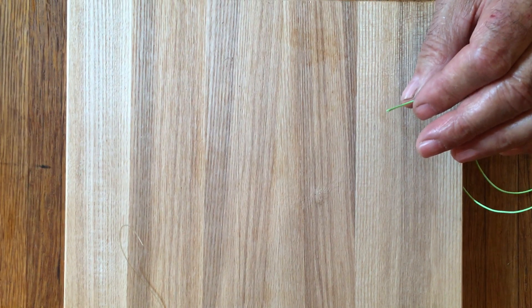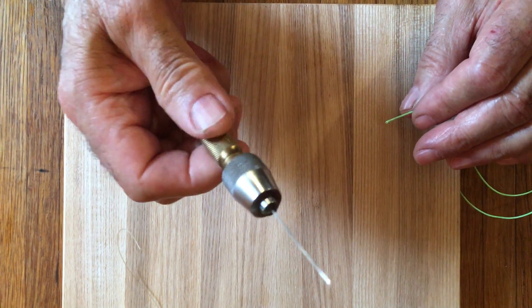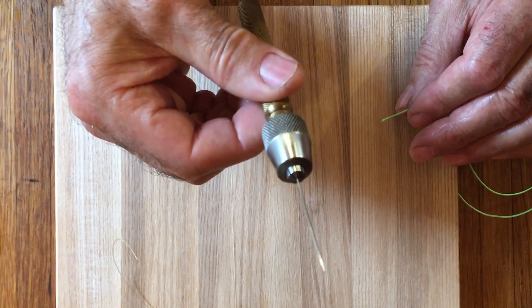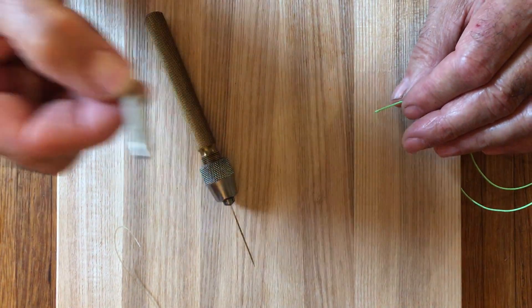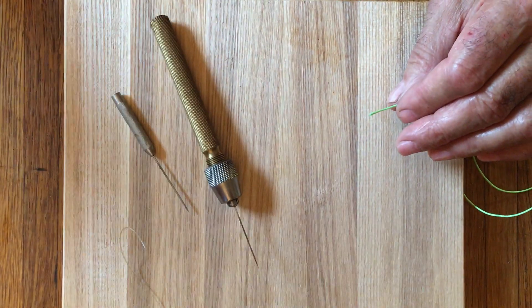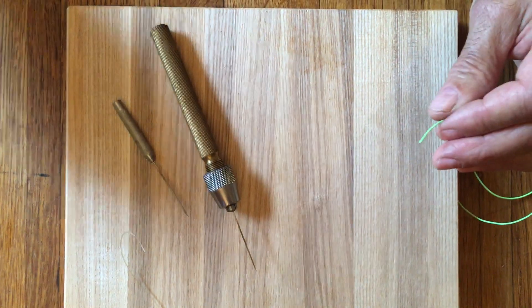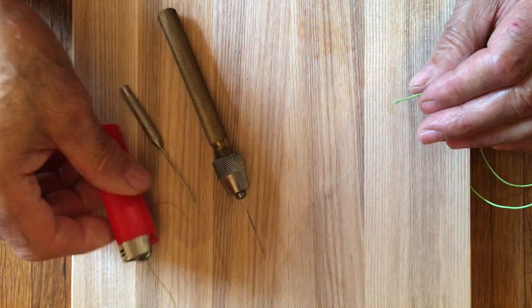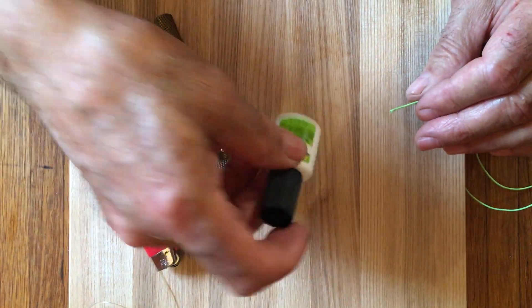All you need is a needle with something that will allow you to hold it. It could be your bobkin or something else. A lighter and some super glue.